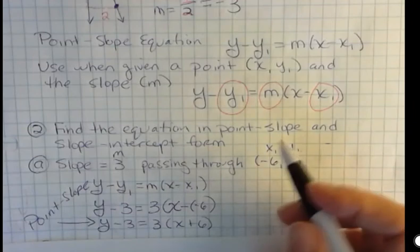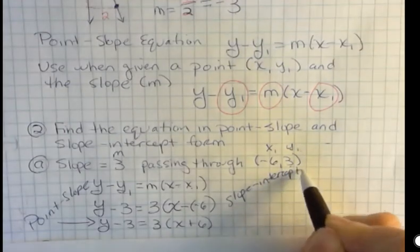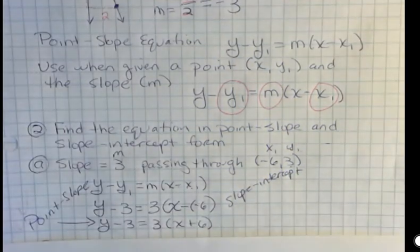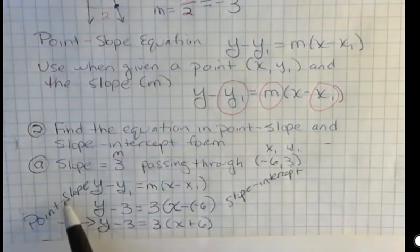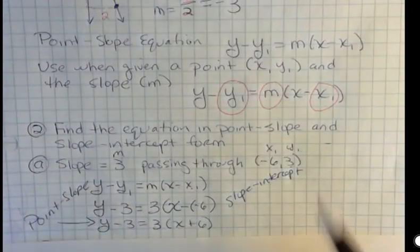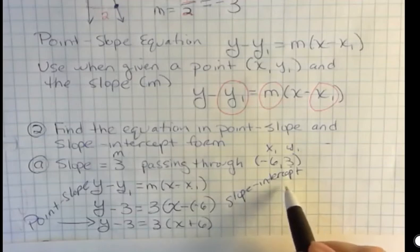And now I want to do slope-intercept. Sometimes in this program, they ask you for slope-intercept only. Sometimes they ask you for both. Read the directions. Even if you want slope-intercept, you can use the point-slope form to get you to that. So how do we get to slope-intercept?